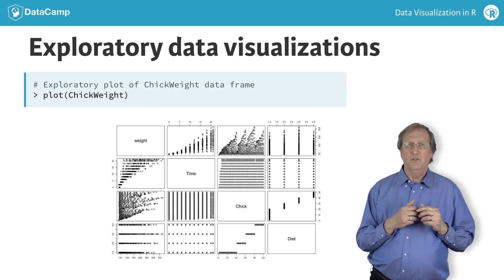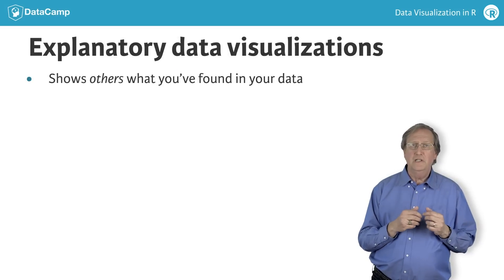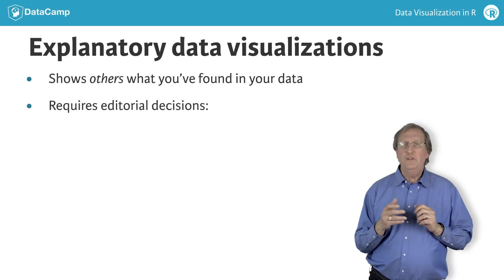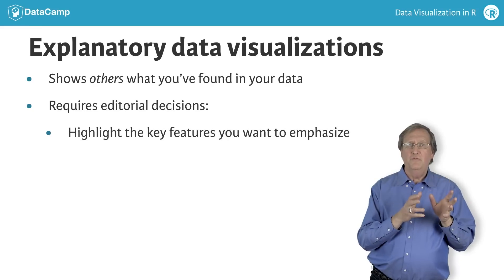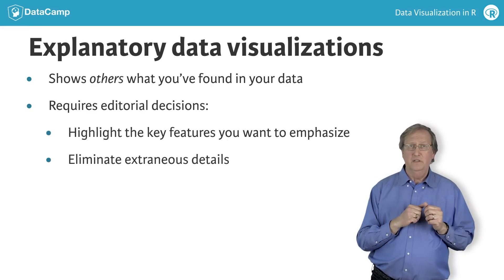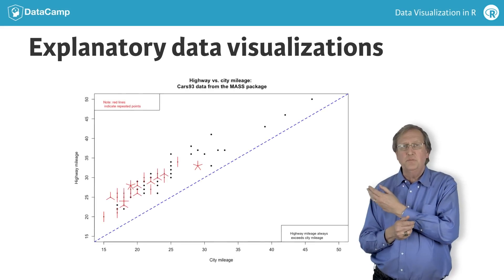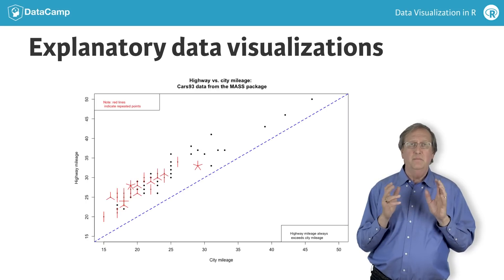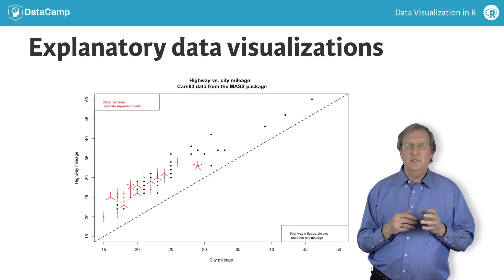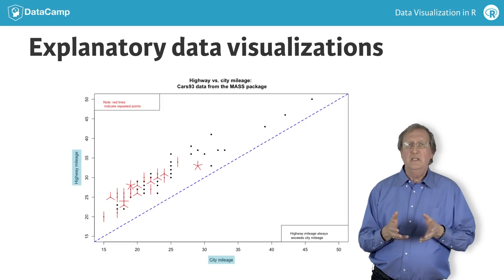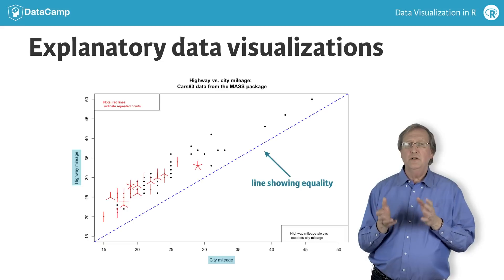Explanatory data visualizations show others what you have found in the data. This means you must make editorial decisions. What features do you want to highlight for emphasis? What features are distracting or confusing and should be eliminated? Here is an explanatory plot, constructed from the CARS-93 data frame in the MAS package, emphasizing that highway mileage always exceeds city mileage, using techniques like reference lines and sunflower plots that you will learn about in this course.